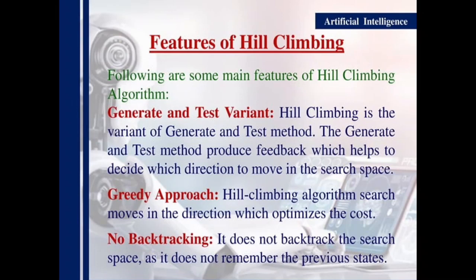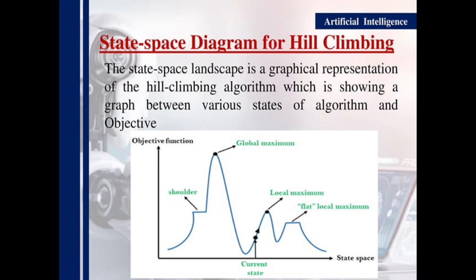Following are some main features of the hill climbing algorithm. Generate and test variant: hill climbing is a variant of the generate and test method. The generate and test method produces feedback which helps to decide which direction to move in the search space. Greedy approach: the hill climbing algorithm moves in the direction which optimizes the cost. No backtracking: it does not backtrack the search space as it does not remember the previous states.